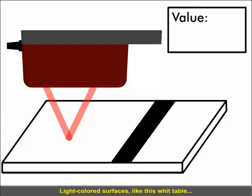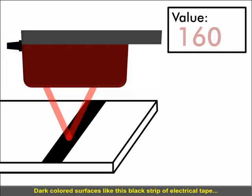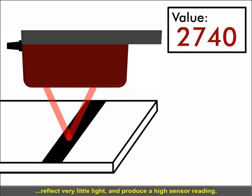Light-colored surfaces, like this white table, reflect a large amount of light and produce a low sensor reading. Dark-colored surfaces, like this strip of black electrical tape, reflect very little light and produce a high sensor reading.